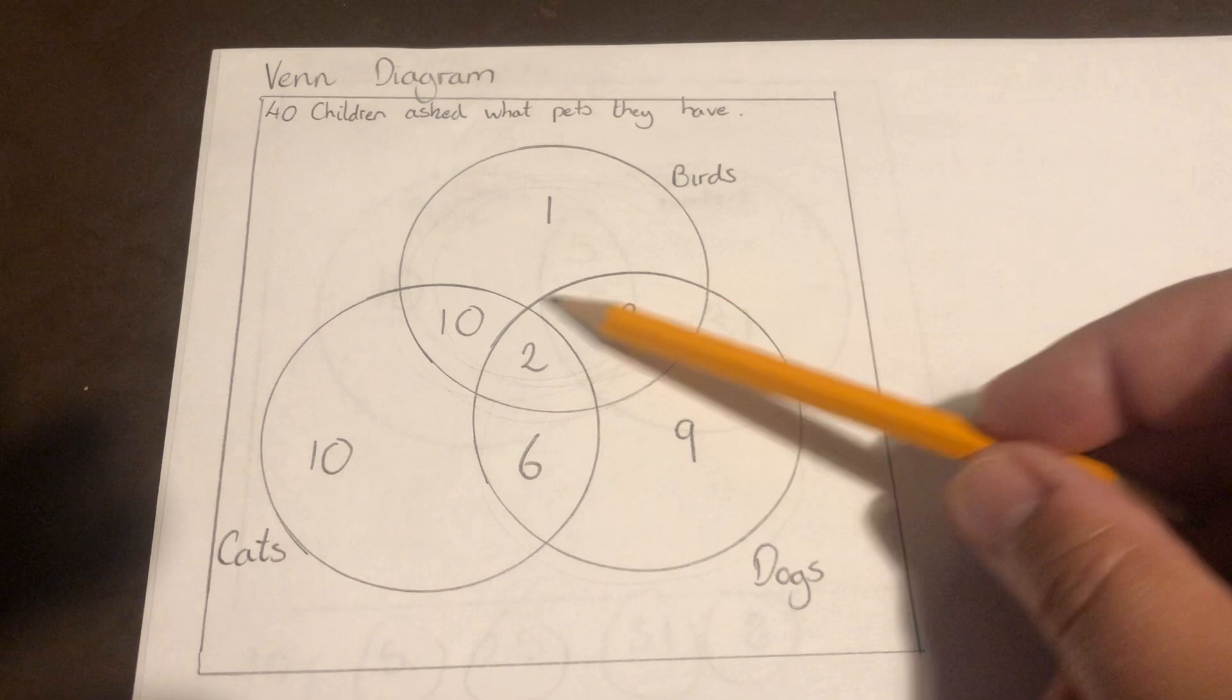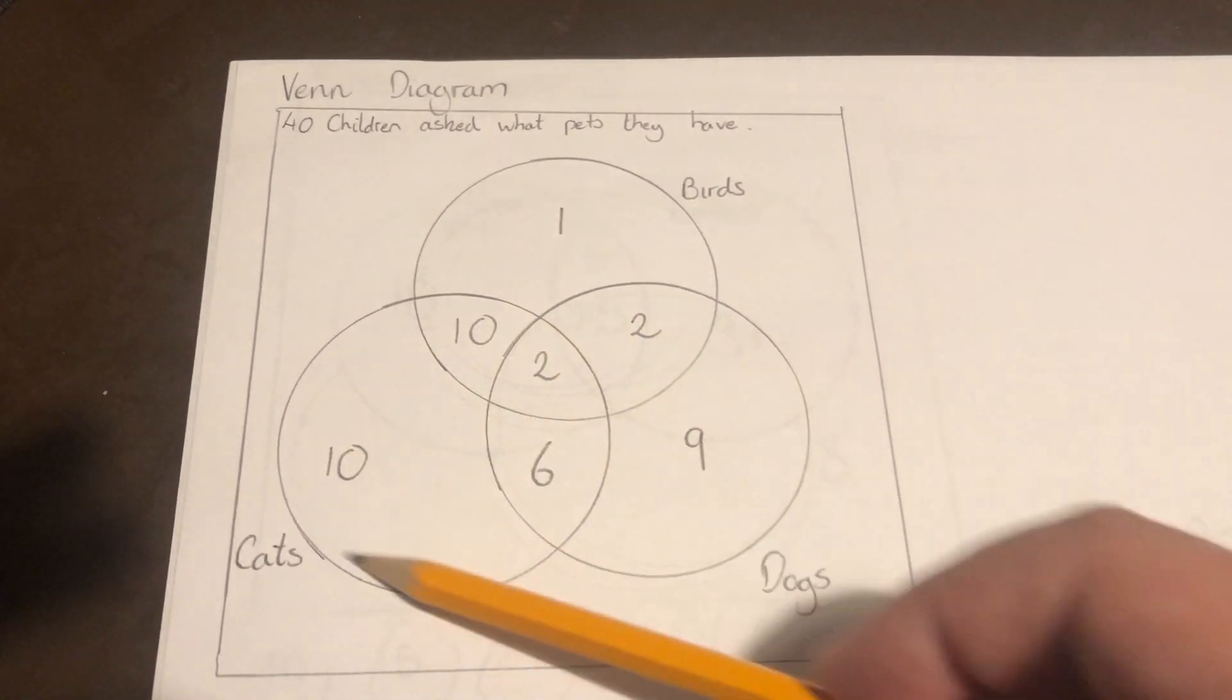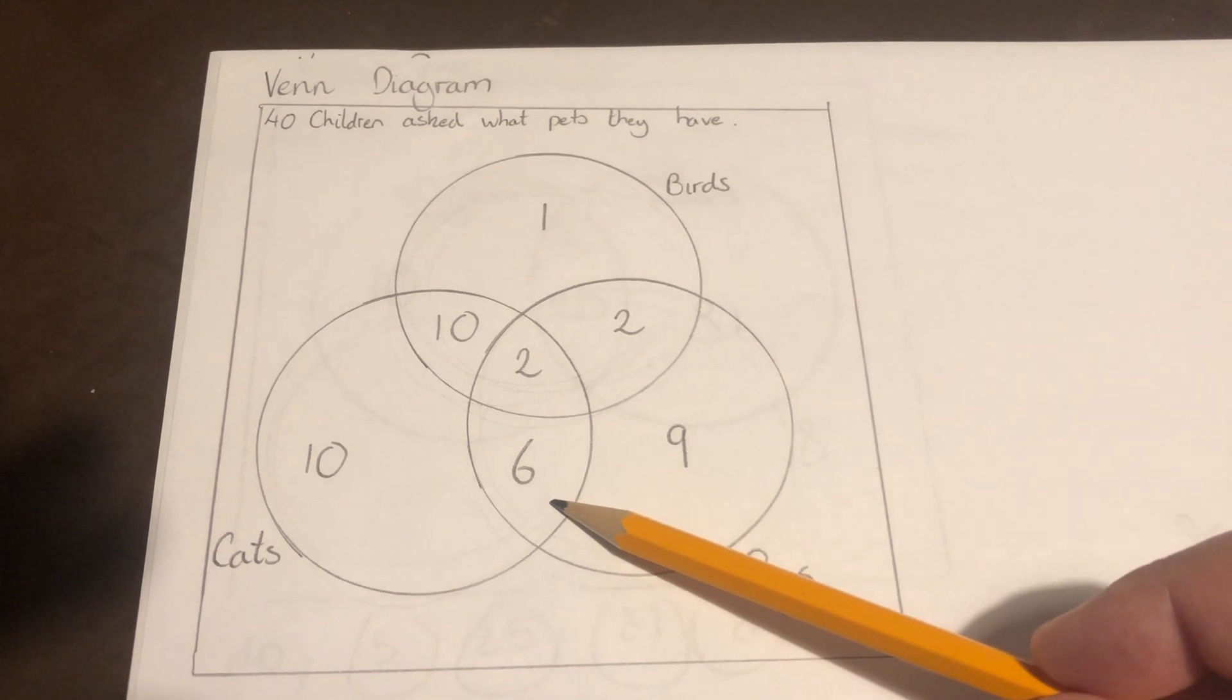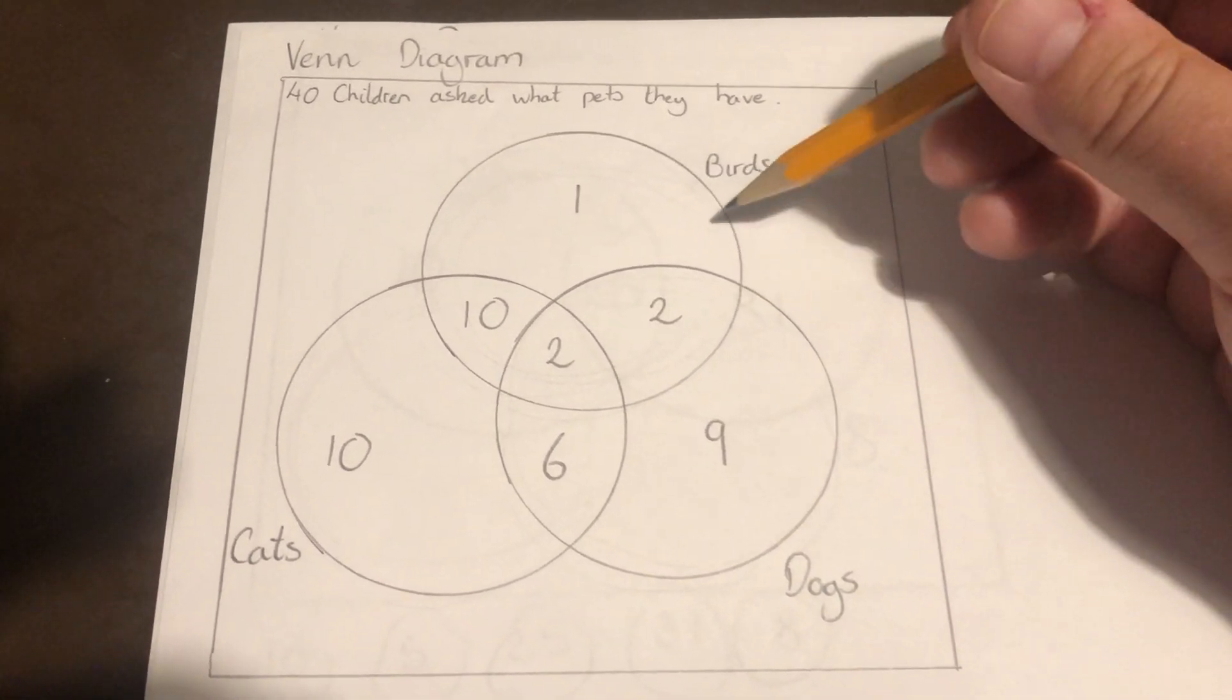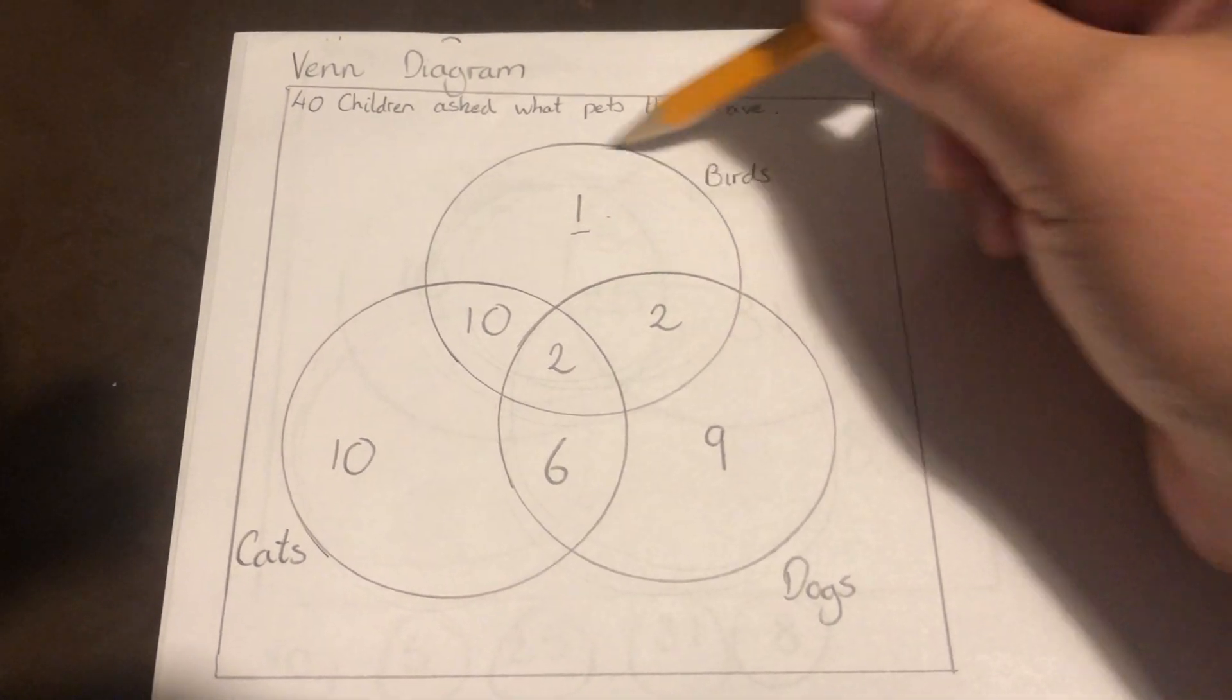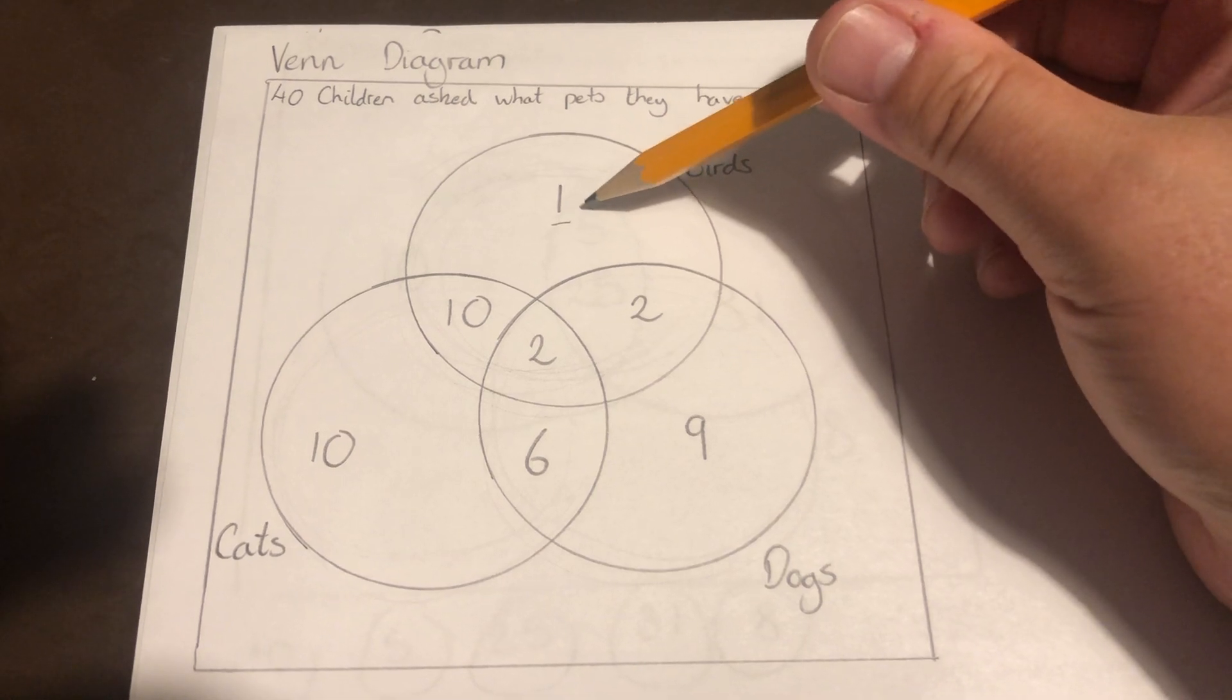In this circle here, it's all the children that have a dog. And in this circle, it's all the children that have a cat. And we can look at the overlap. So this number here is just in the bird circle, nothing else. So this is just someone who has one bird.